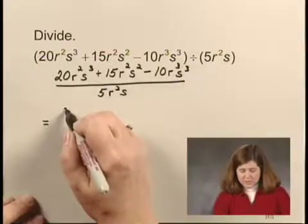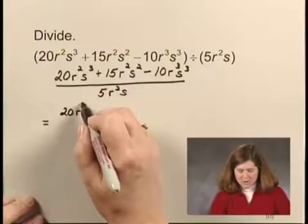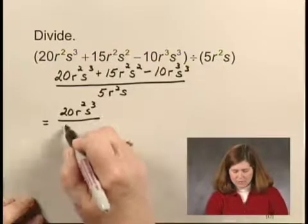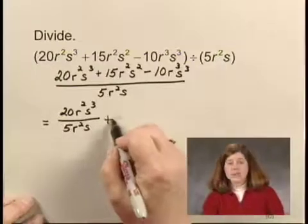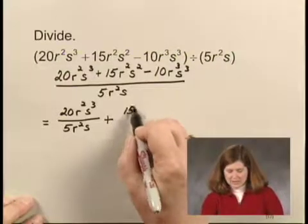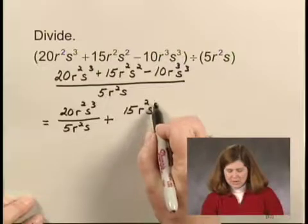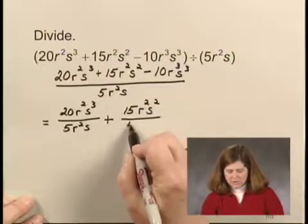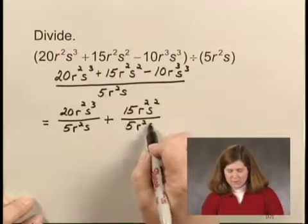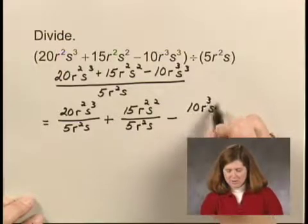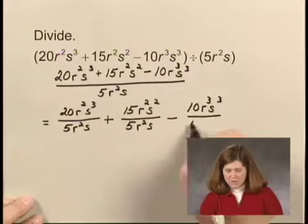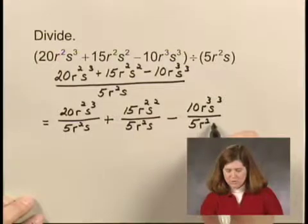In other words, I think of it as 20r squared s cubed over 5r squared s plus 15r squared s squared over 5r squared s minus 10r cubed s cubed over 5r squared s.